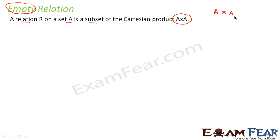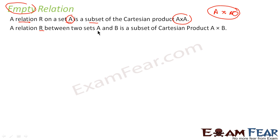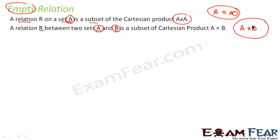So relation R is nothing but a subset of A cross A. If you have set A and want to find a relation on it, you get A cross A, take a subset, and that is the relation R. Similarly, if you have two sets A and B, the relation is nothing but a subset of the Cartesian product A cross B.